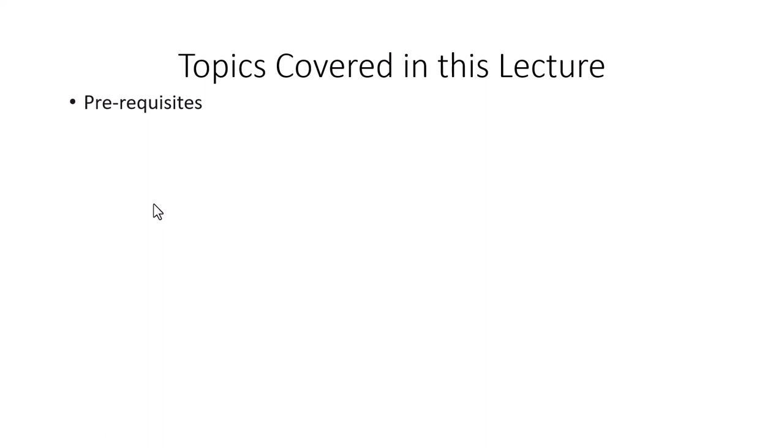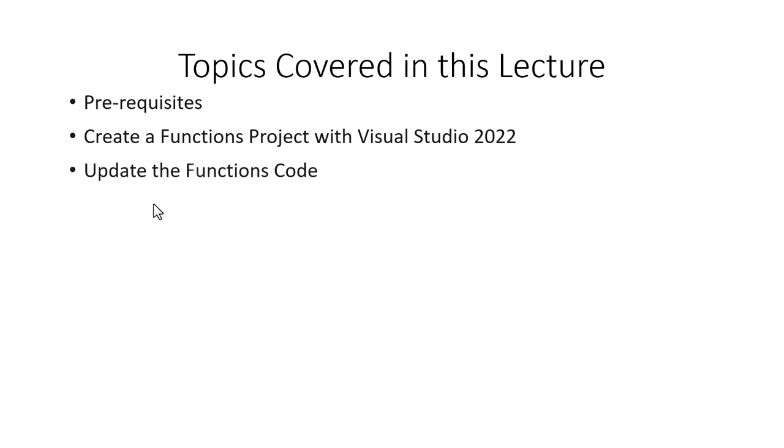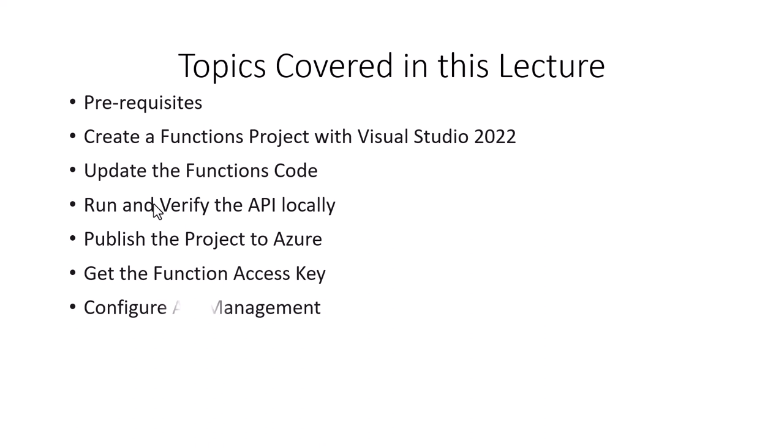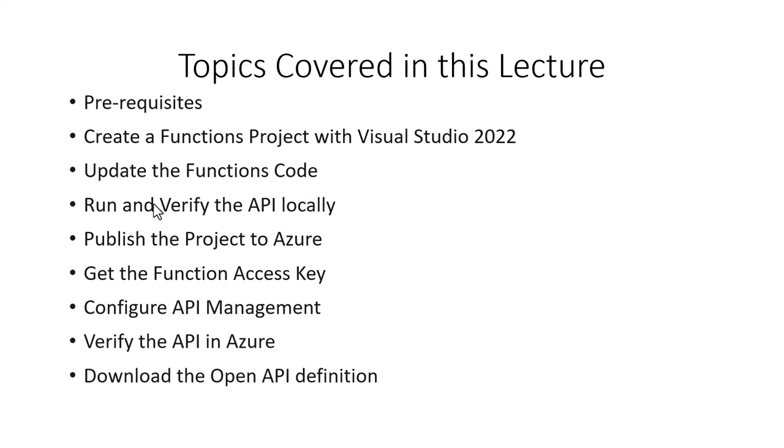Let's go over the learning outcomes of this tutorial. The topics covered are: first, the prerequisites, which will be discussed and you will need to have installed already along with an active Azure subscription. Then we'll create a functions project with Visual Studio 2022 and update the function code, run and verify the API locally, publish the project to Azure, get the function access key, configure API management, verify the API in Azure, download the OpenAPI definition, and finally clean up the resources.